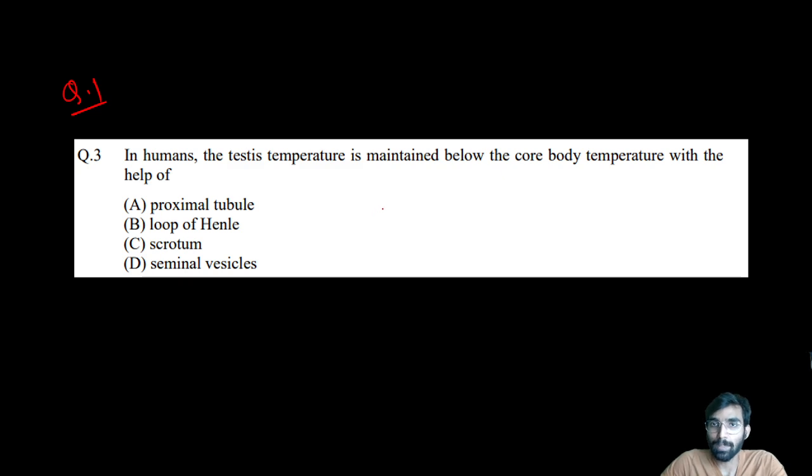Question number one: In humans, the testis temperature is maintained below the core body temperature with the help of proximal tubule, loop of Henle, scrotum, or seminal vesicle? Read the question carefully and think. Generally body temperature is different and this particular organ has generally two degree temperature lower than our body temperature. The correct answer is scrotum.